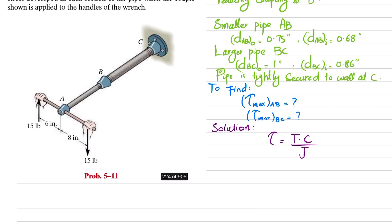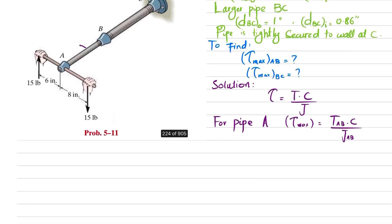For pipe AB, the maximum shearing stress equals T_AB times c divided by J_AB. We cut this pipe and can see a force of 15 pounds producing a couple that tends to rotate clockwise. That torque equals 15 times the total distance, which is 8 plus 6 inches, giving 210 pound-inches.